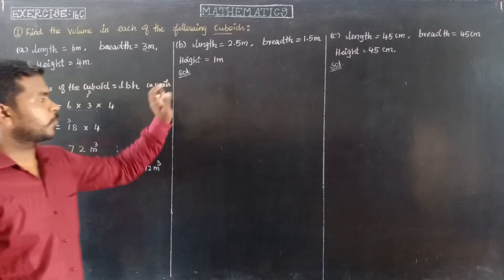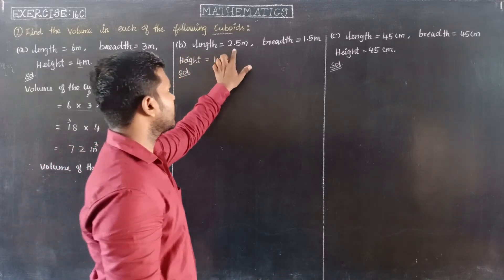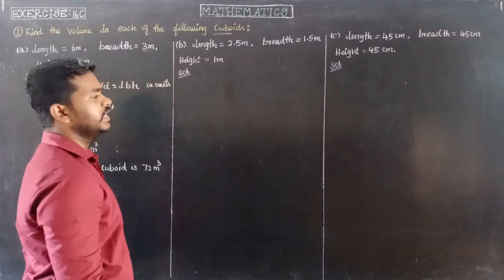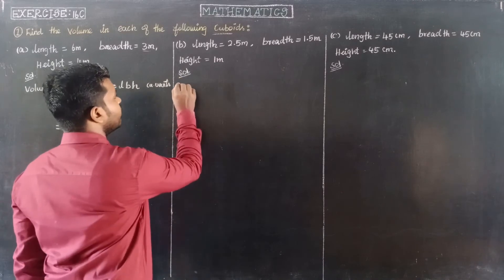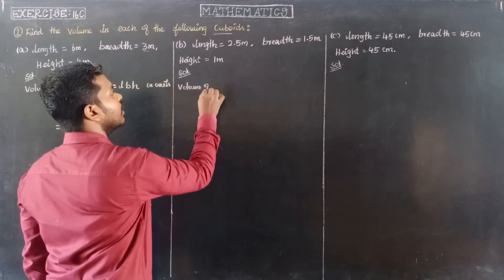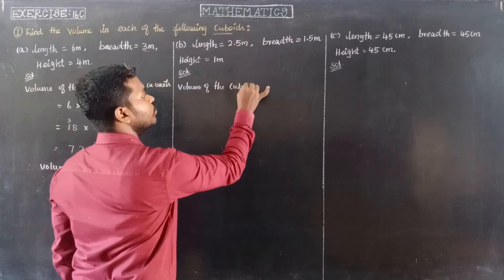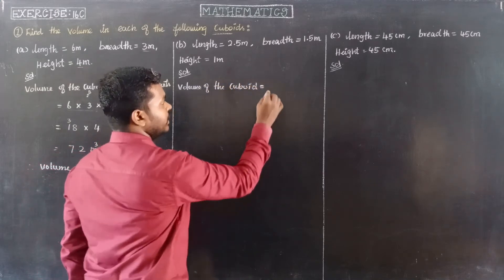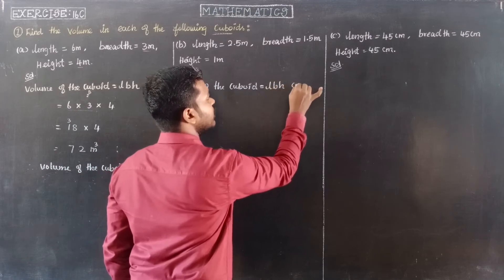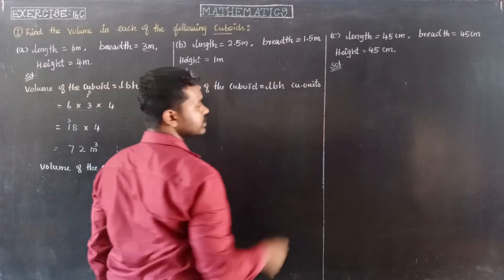So, next one, question B, subdivision B. Length 2.5 meter, breadth 1.5 meter and height 1 meter. So, same formula — value of the cuboid is equal to length into breadth into height, cubic units.